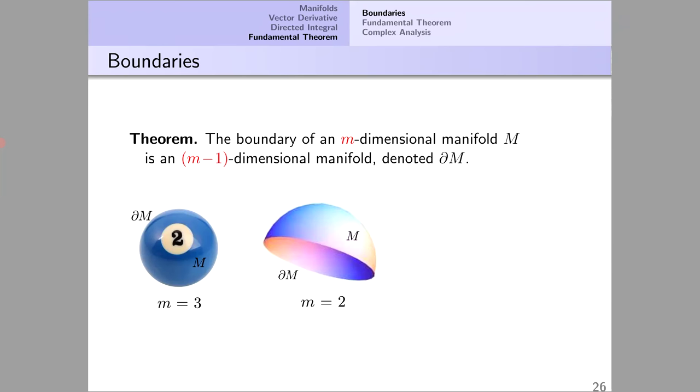Here is the M equals 2 case. This time the manifold is a hemisphere M, and its boundary is a circle, which is a one-dimensional manifold.